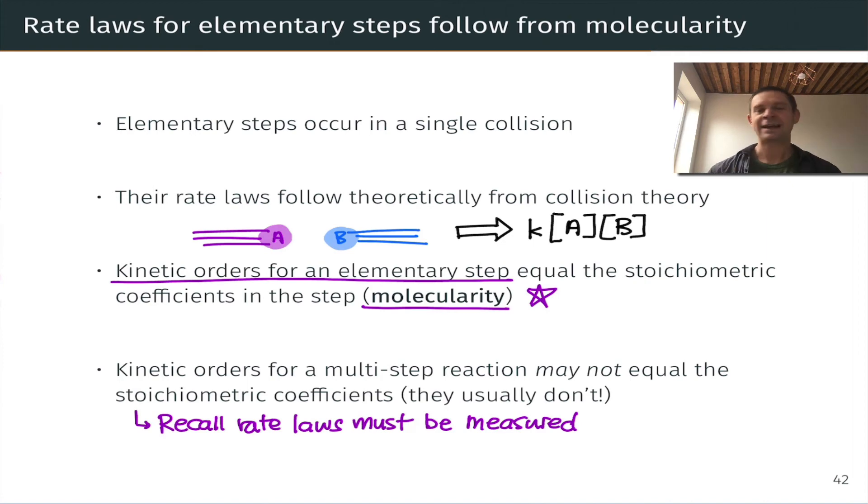Now the last point we've seen previously, kinetic orders for a multi-step reaction may not equal the stoichiometric coefficients. And this is because the molecularities in the rate determining elementary step may not match the stoichiometric coefficients in the overall balanced equation. And the upshot of this is that rate laws must be measured as a result. They can't just be inferred from the overall balanced equation.